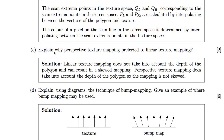Part c: why is perspective texture mapping preferred to linear texture mapping? When using linear texture mapping, it doesn't take into account the depth of a pixel or the depth of a polygon, which can result in skewed mapping. Perspective texture mapping does take into account that depth, and so that's preferred.